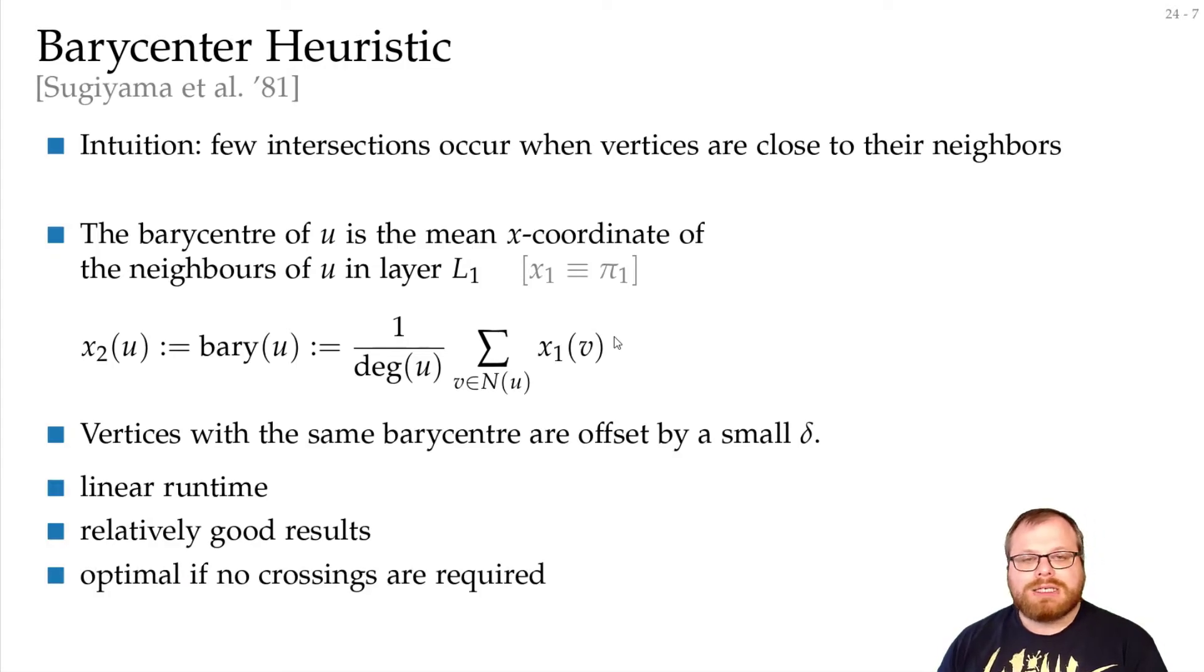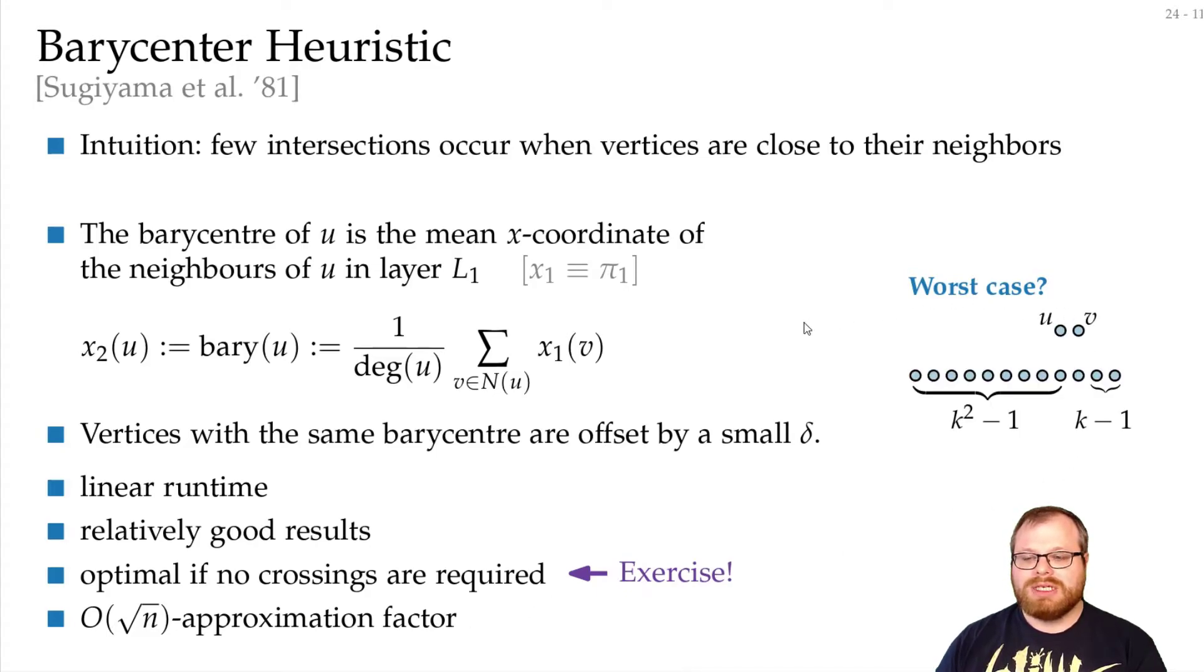In fact, if we can do it without crossings, then this also gets the optimal solution. But in general, this is only an order of square root of n approximation factor, which is not very good. To see that factor, look at this example. We have here k squared minus 1 vertices, we have here 1 and here k minus 1.